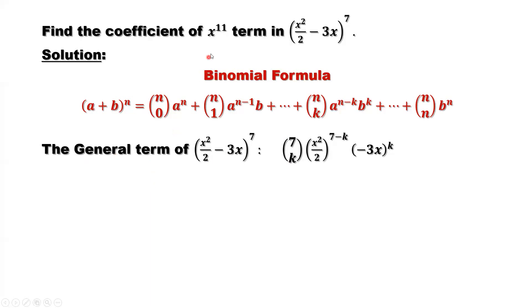The question is, we only care about the constants in front of x to the power 11. We need to simplify this general term. We have x here and also x here, we need to put the two x together and add up their powers. 7Ck times (x²/2)^(7-k) times (-3x)^k. We take constants out: 7Ck, (1/2)^(7-k), and (-3)^k.